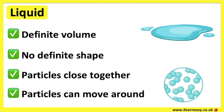Liquids are also very hard to compress, and they can take the shape of the container they're in — for example, a bottle. The volume of a liquid stays the same. Examples of liquids are water and petrol.